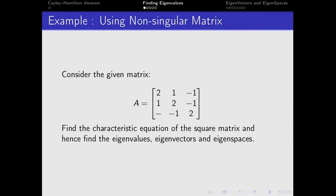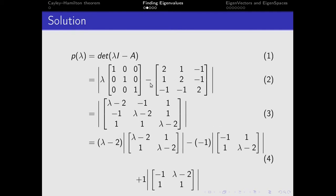So let's look at an example. We will consider a given matrix A, find the characteristic equation of the square matrix, and hence find the eigenvalues, eigenvectors, and eigenspaces. Let's look at it in detail.